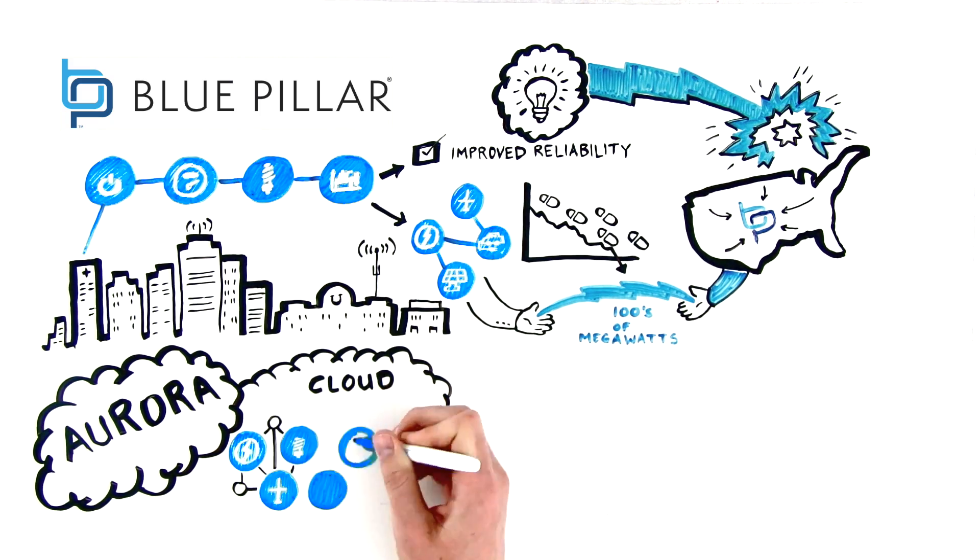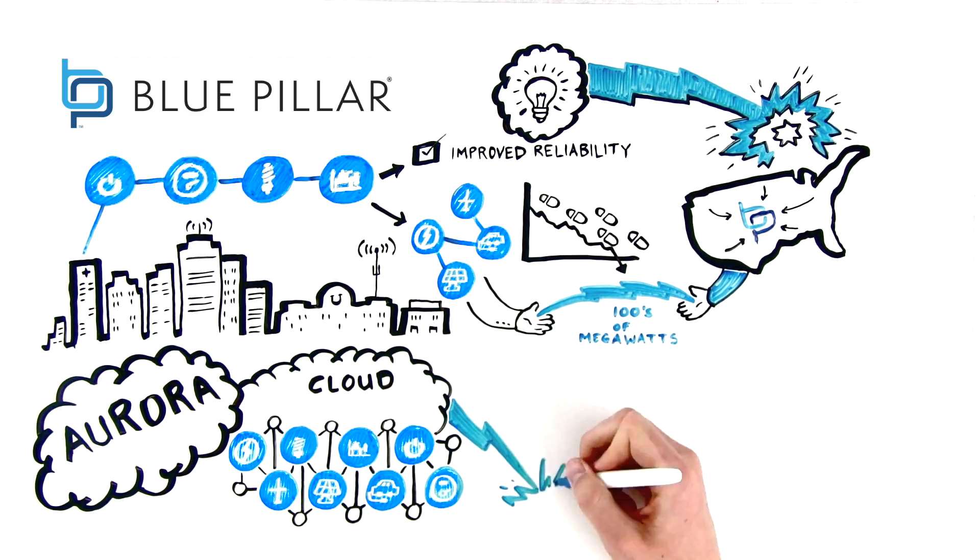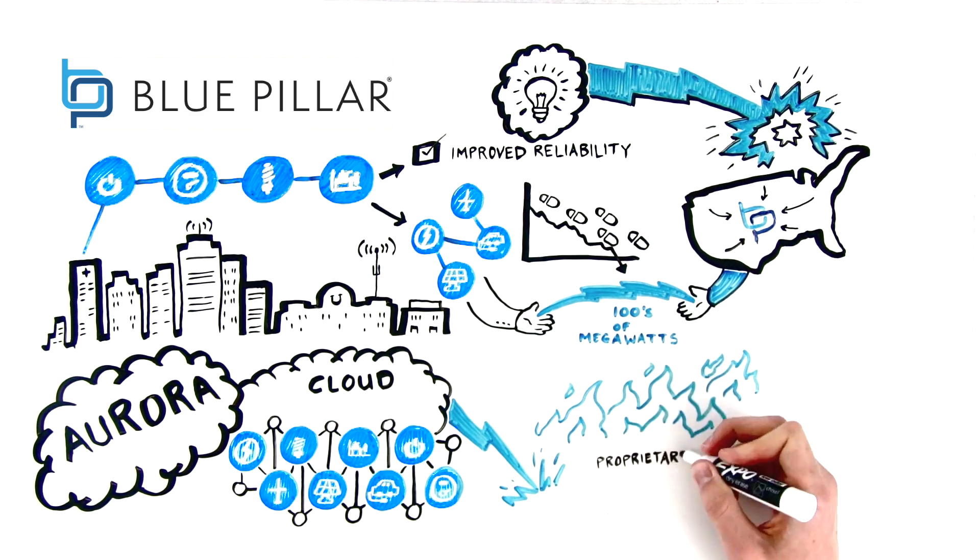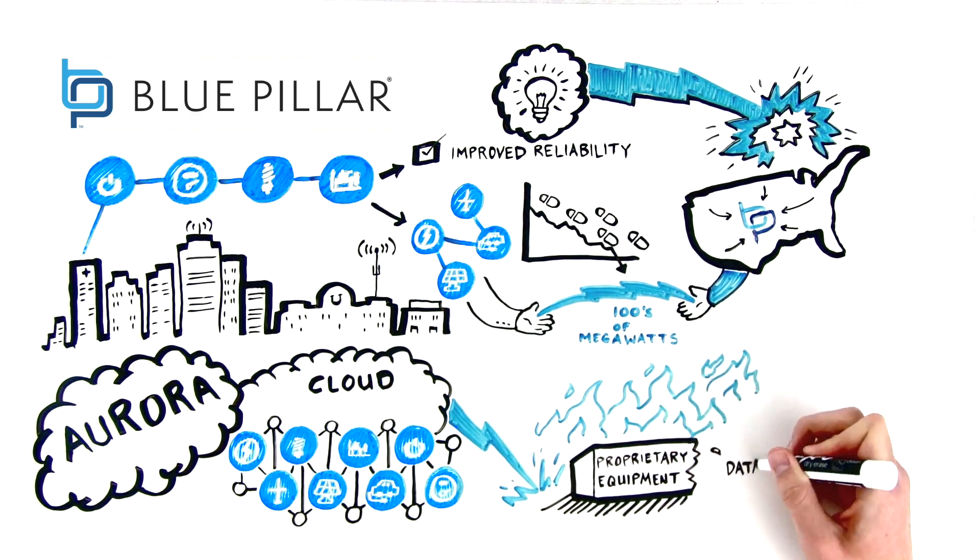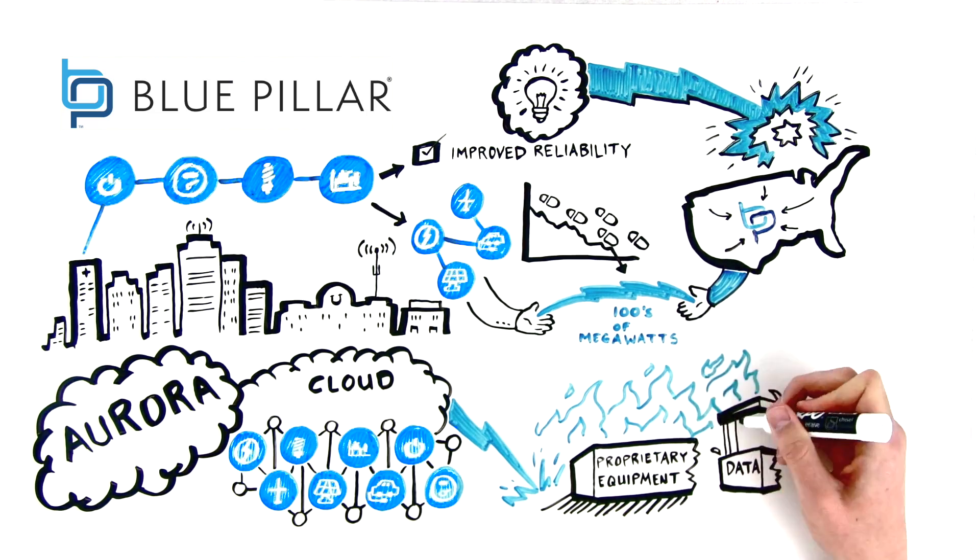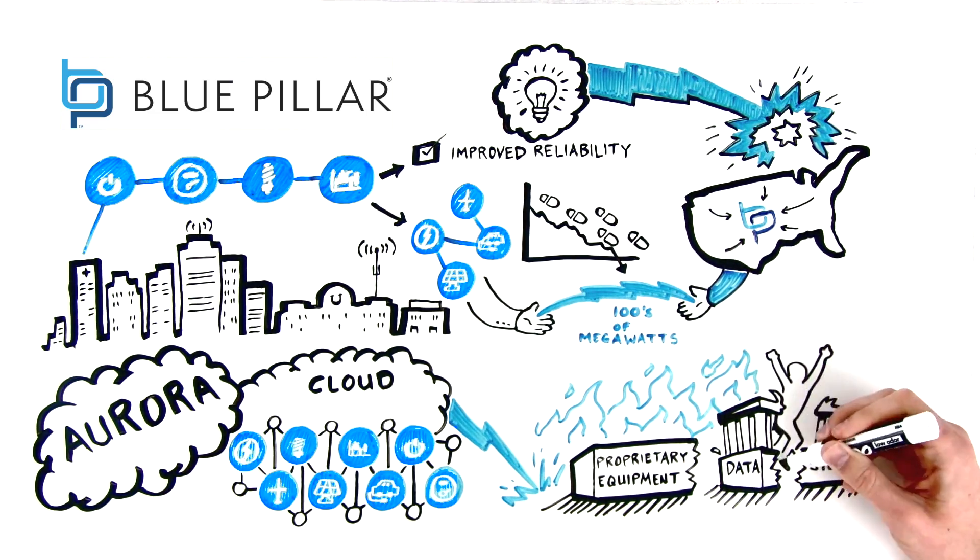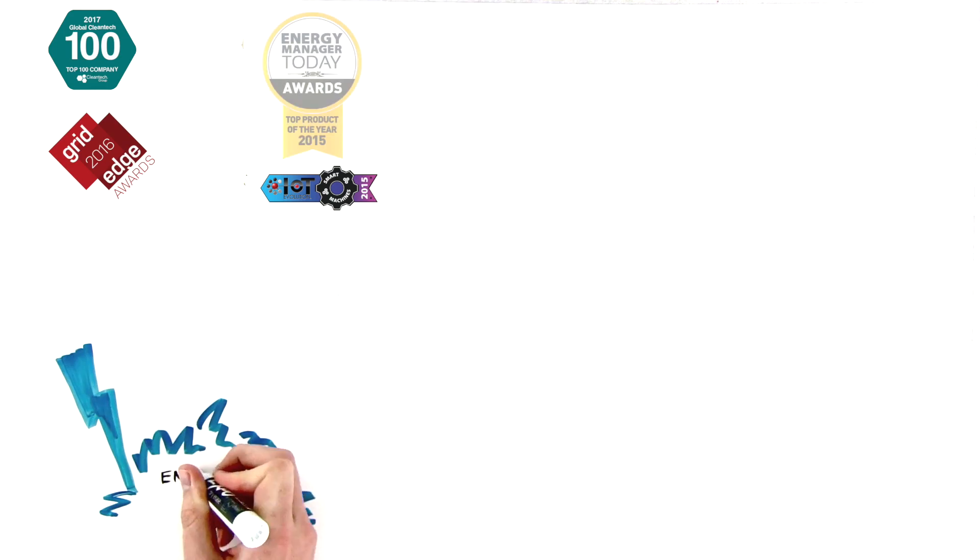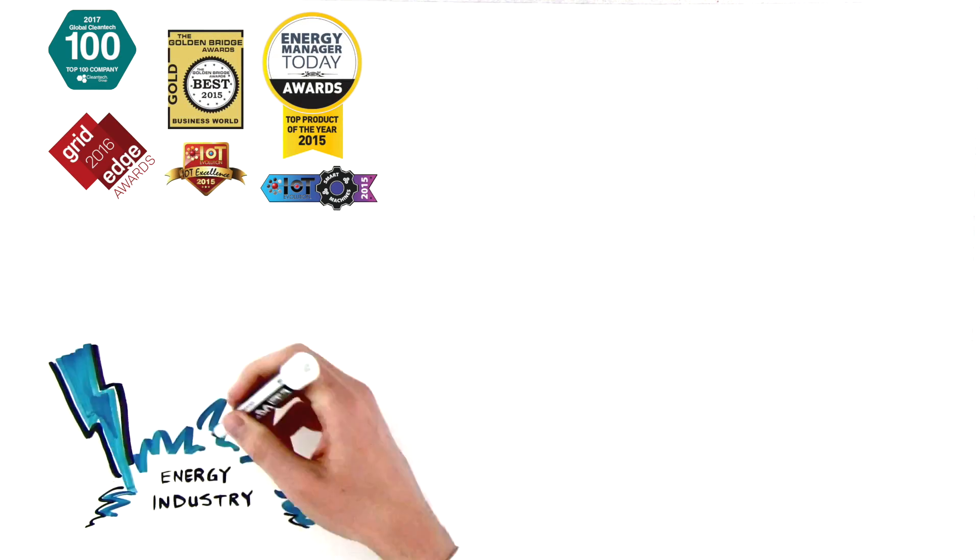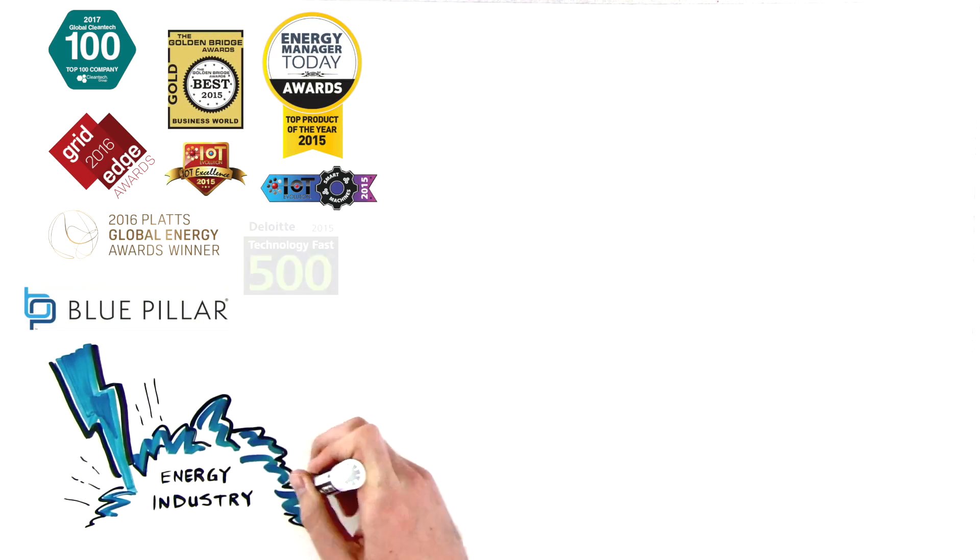The benefit of connecting energy things into a network once and leveraging it many times is the spark catching fire, disrupting the energy industry and freeing our customers from stranded, proprietary equipment and data silos that don't scale beyond single-use applications or single-site installations. From relative obscurity to being named one of the top 20 companies most likely to disrupt the grid edge, many believe Blue Pillar will disrupt the entire energy industry.